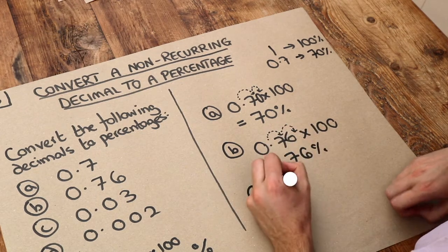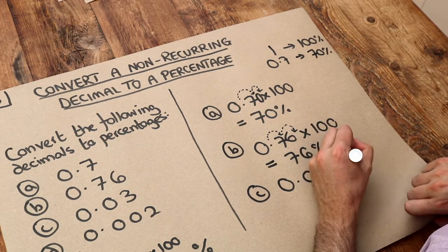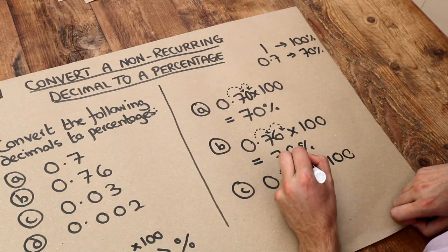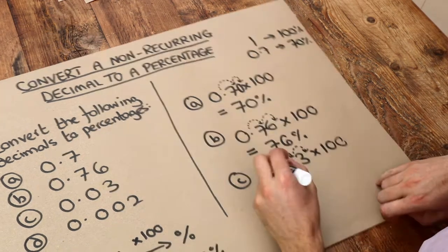The next one, 0.03, again, times by 100, move the decimal point two places, and now it's just 3% with a decimal point on the end.